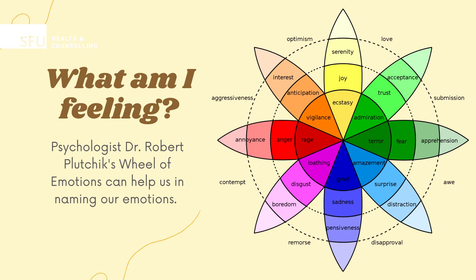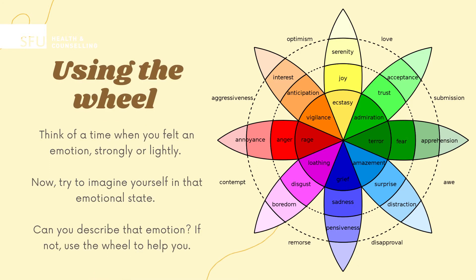A great place to start with naming emotions is Dr. Robert Plutchik's Wheel of Emotions. There are different versions of varying complexity that exist, but we will use the version shown here. The wheel shows you the eight basic emotions: joy, trust, fear, surprise, sadness, anticipation, anger, and disgust.